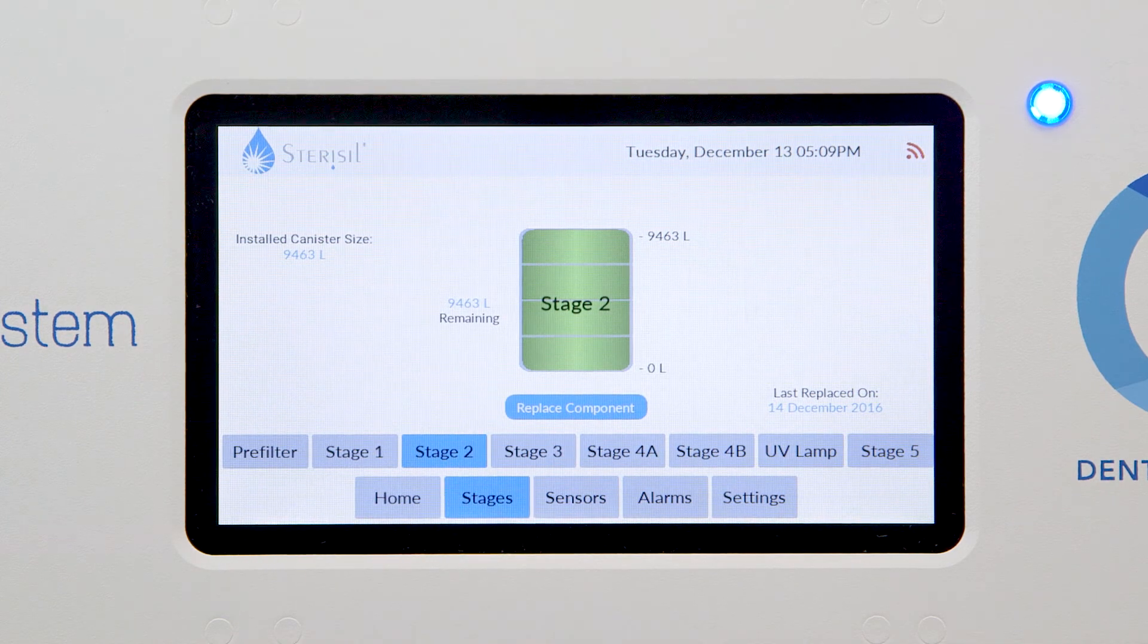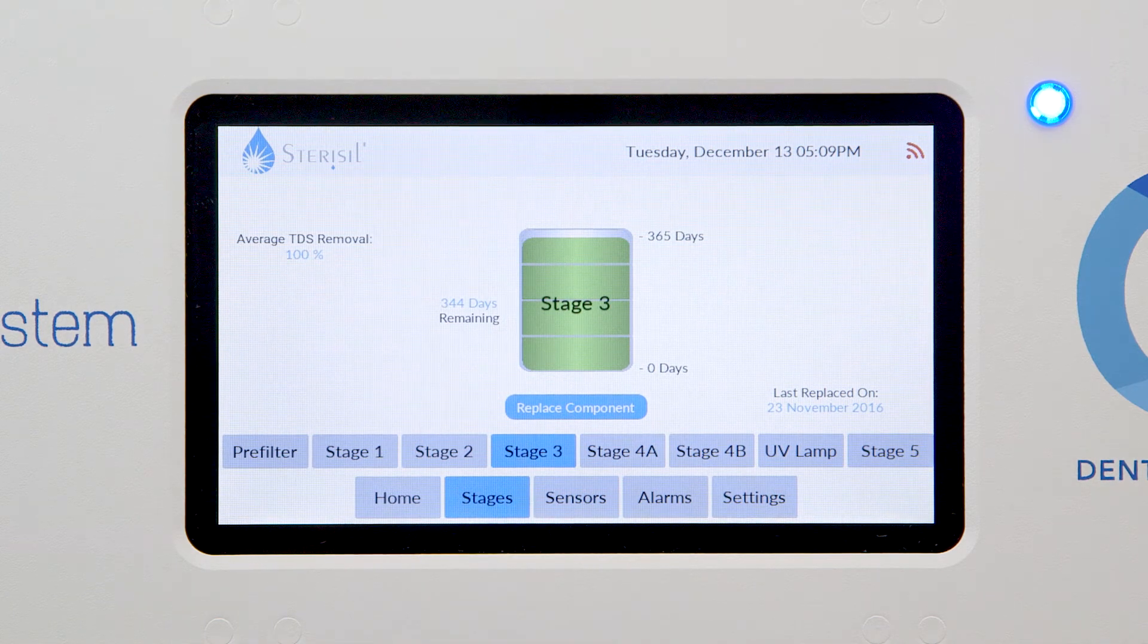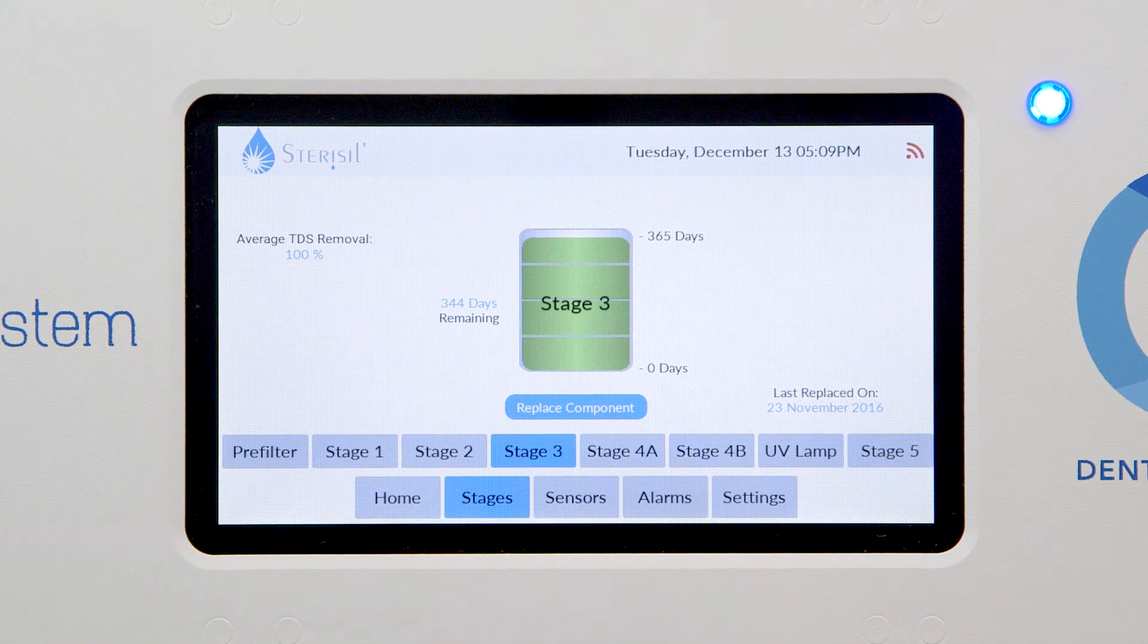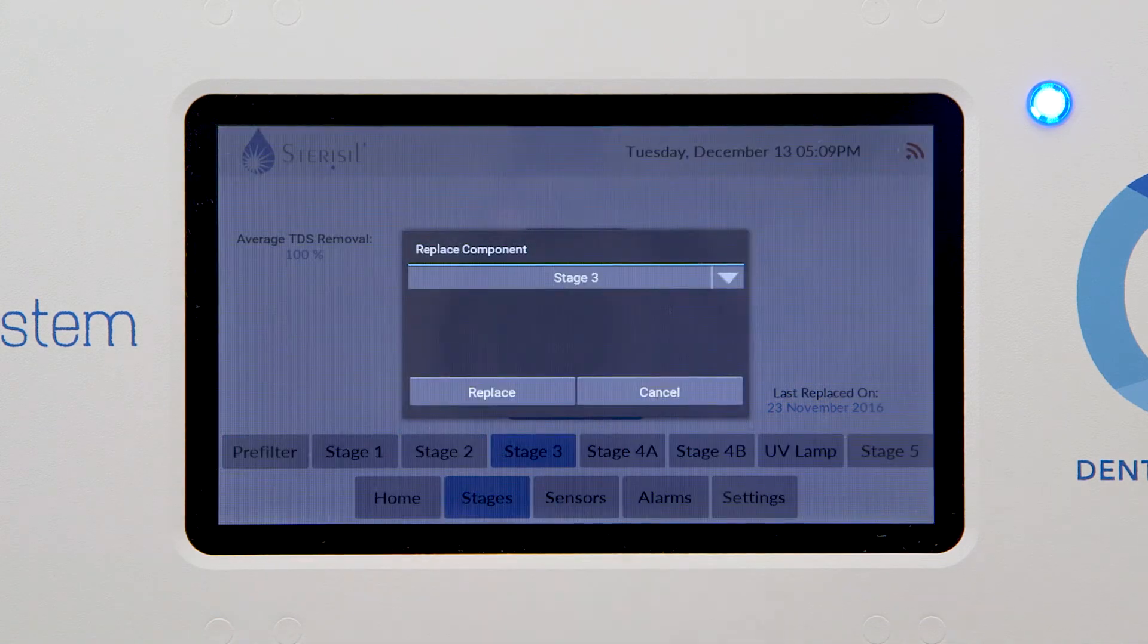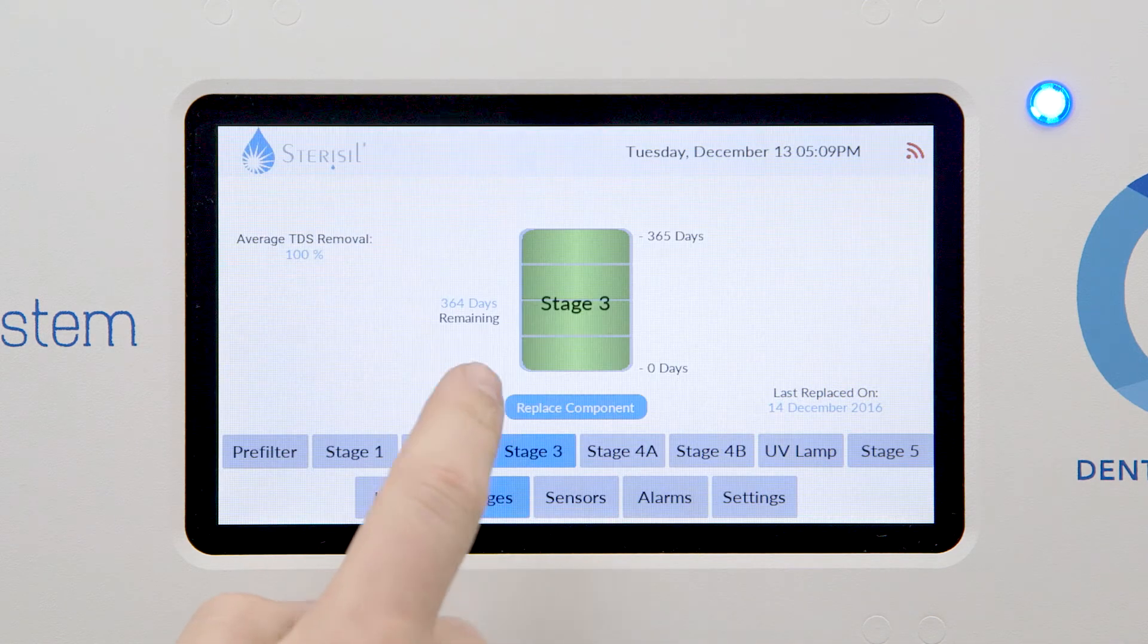Stage 3's lifespan is based on either a 364-day count or the TDS water quality coming off it. If the counter on Stage 3 is not reading 364 days, select Replace Component, then touch Stage 3 from the drop-down menu and touch Replace.